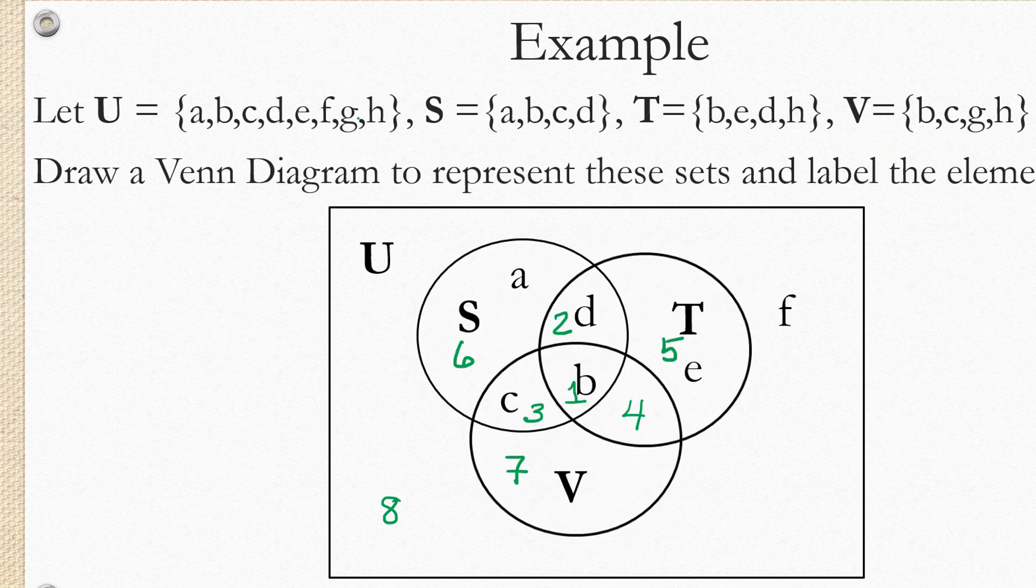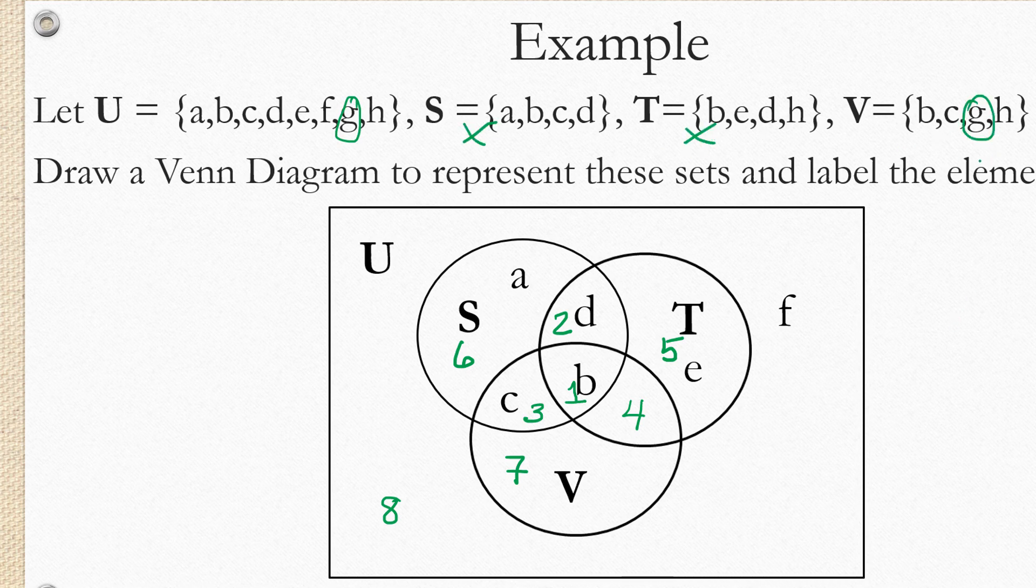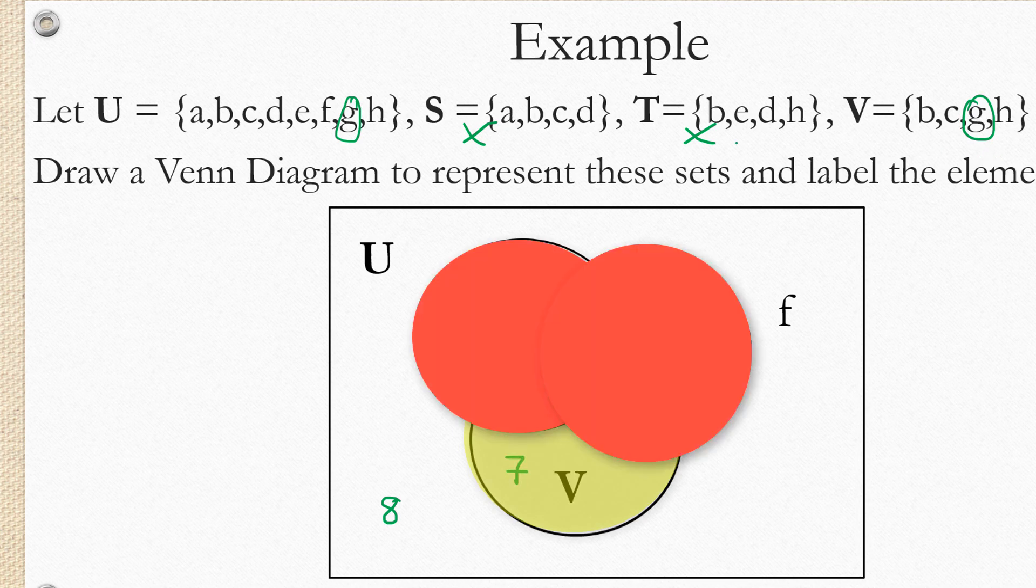Now we have element G. G is not in S. It's not in T, but it is in V. So we're looking for the region that's in V but doesn't touch S or T. And that's region seven. So we're going to place G in region seven.